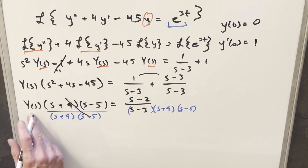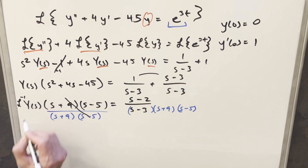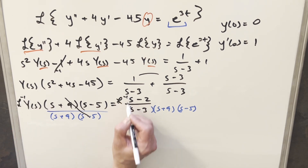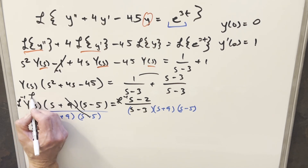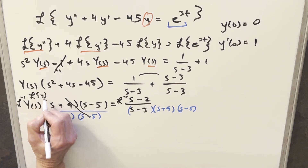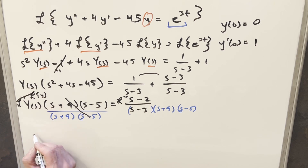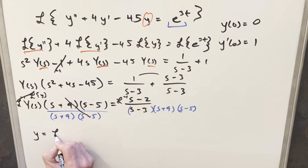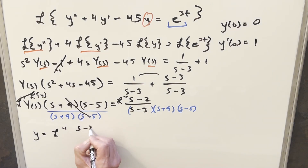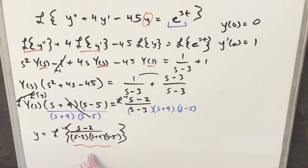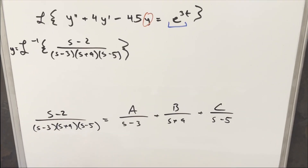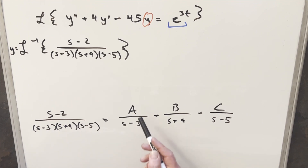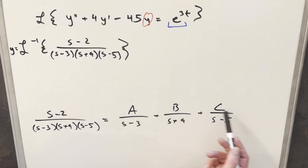Now all I need to do to isolate y is take the inverse Laplace on both sides. The big Y(s) is just the Laplace of y, so that cancels and we've isolated y. All we need to do is find the inverse Laplace of s minus 2 over the quantity s minus 3 times s plus 9 times s minus 5. I don't have a nice formula for this directly, so I'll split it up using partial fractions. Let me clean up the board and set up partial fractions with constants a, b, and c.